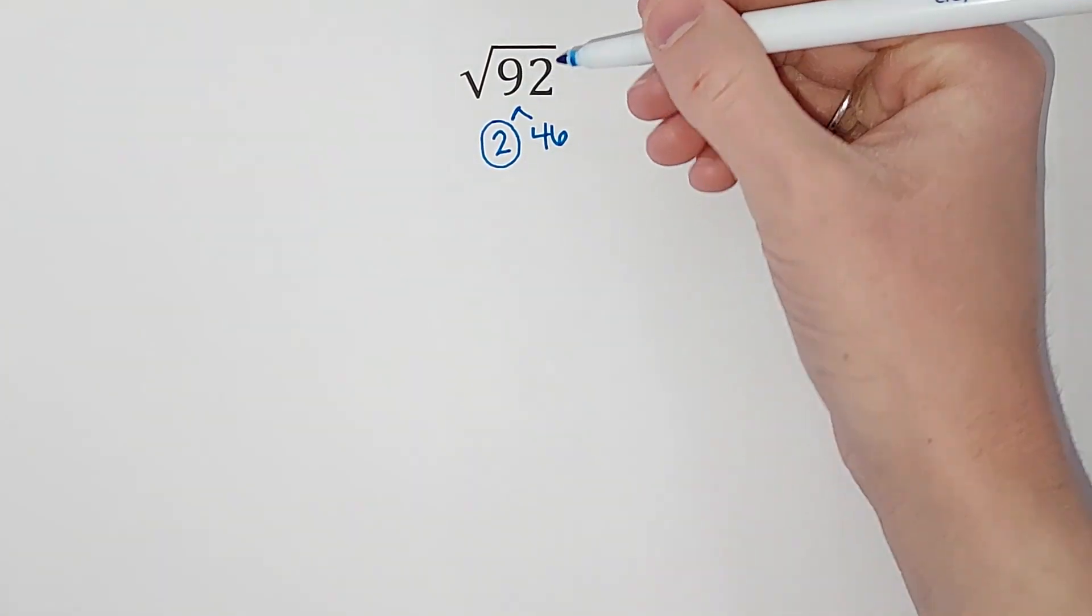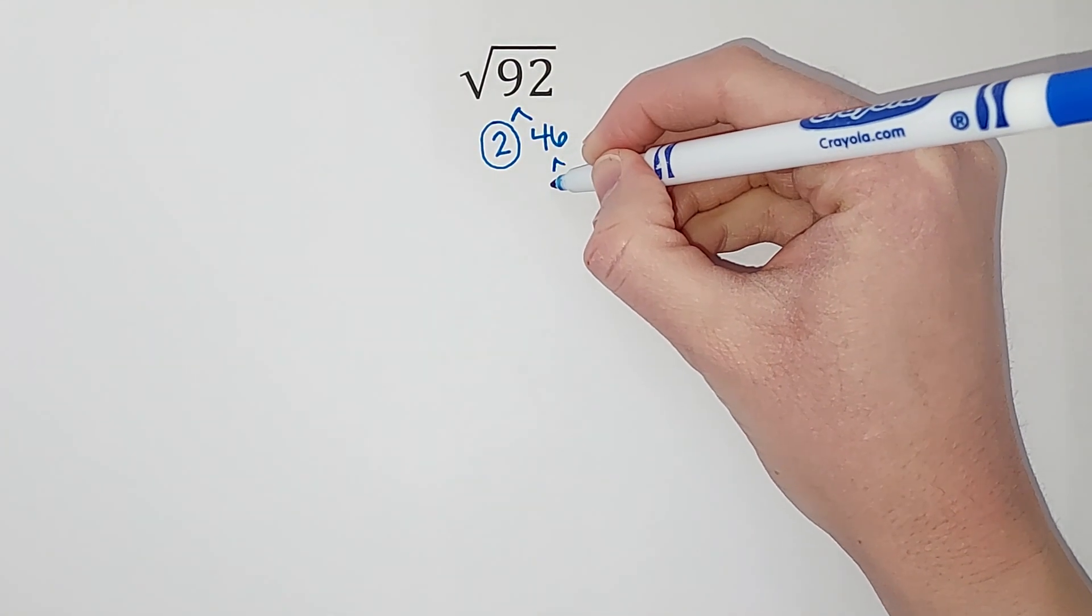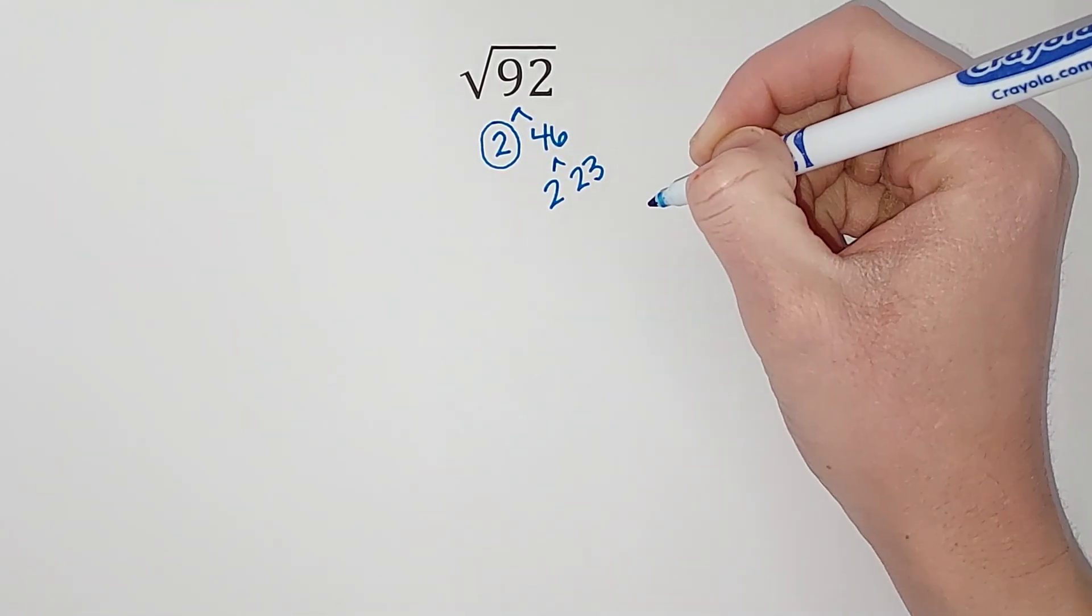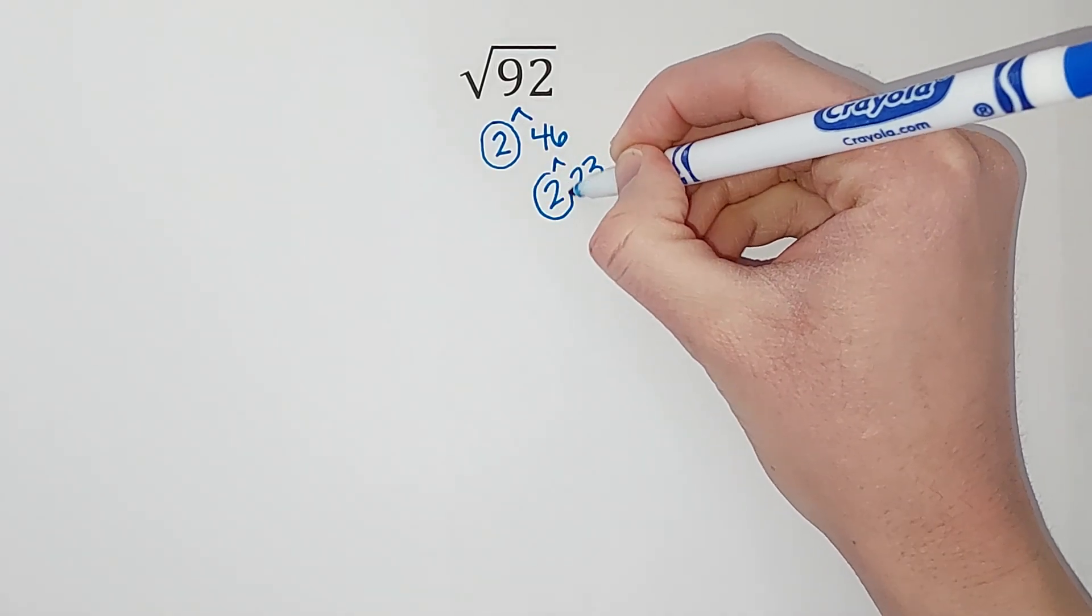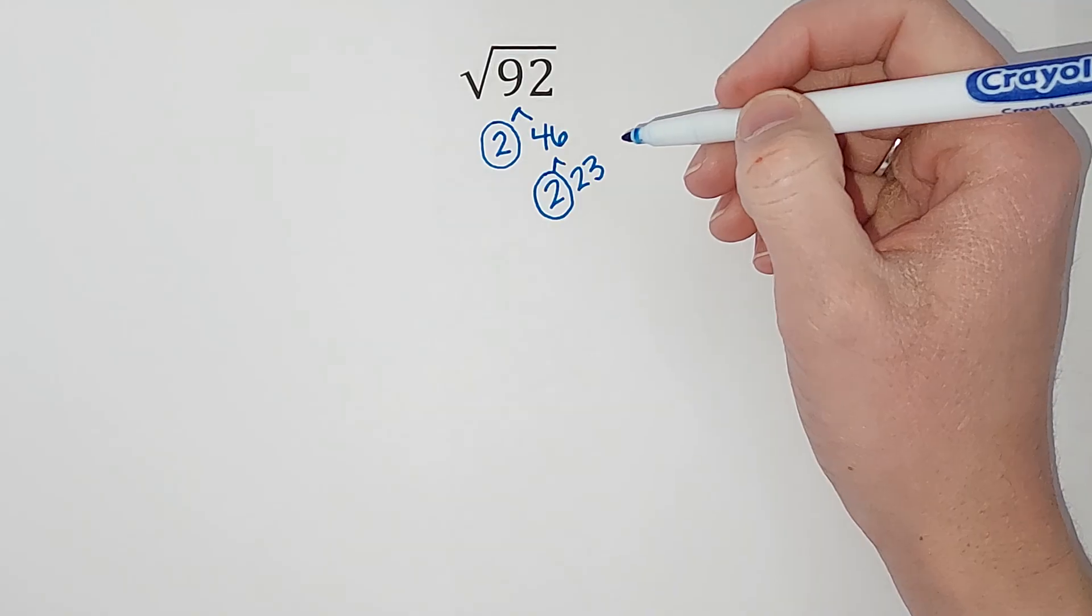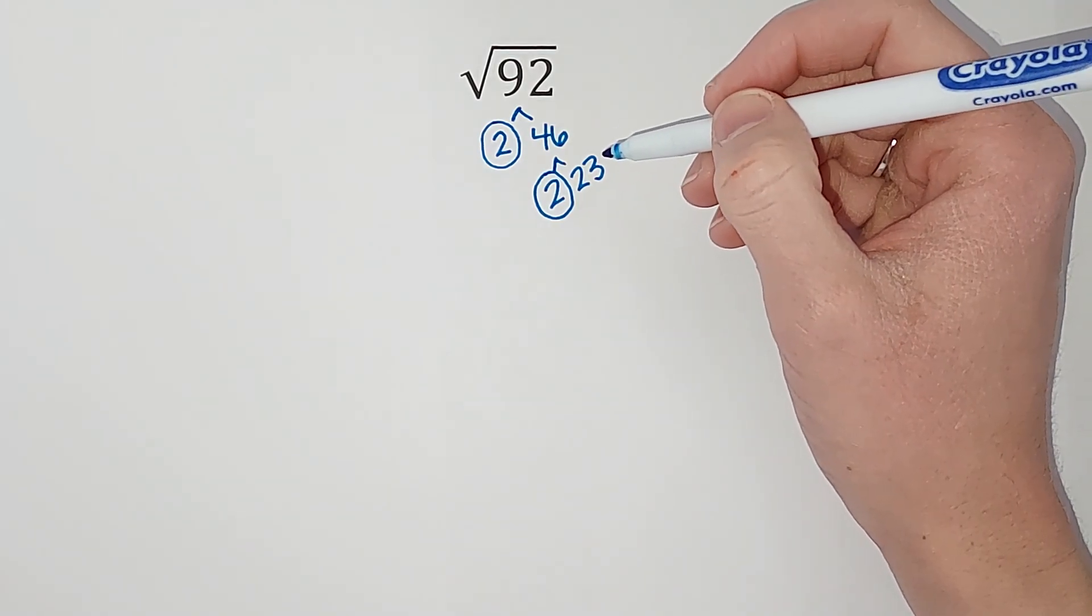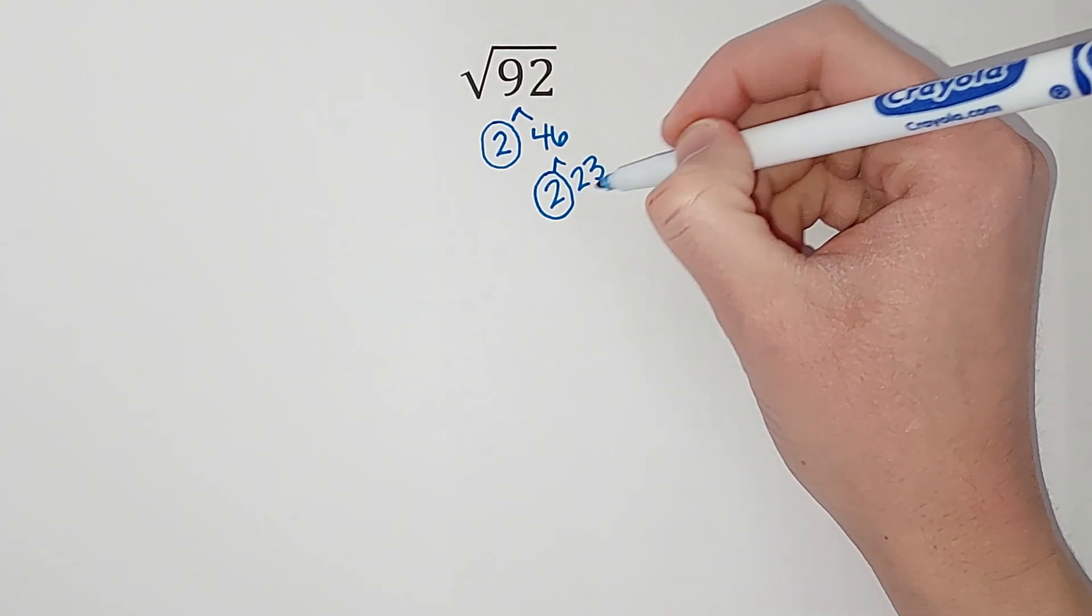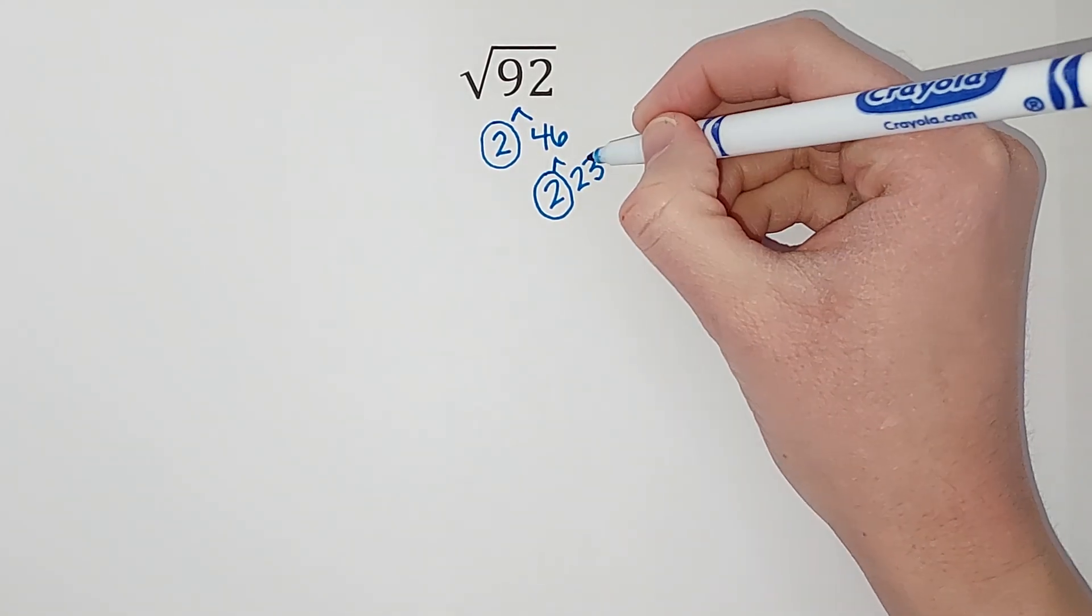But 46 can be broken down again, so 2 times 23 gives me 46. 2 is prime. Is 23 prime? You just have to think about it for a second. It's odd, so 2 doesn't go into it, 3 doesn't go into it. I can't think of any two numbers that I can break 23 down into, so it is prime as well.